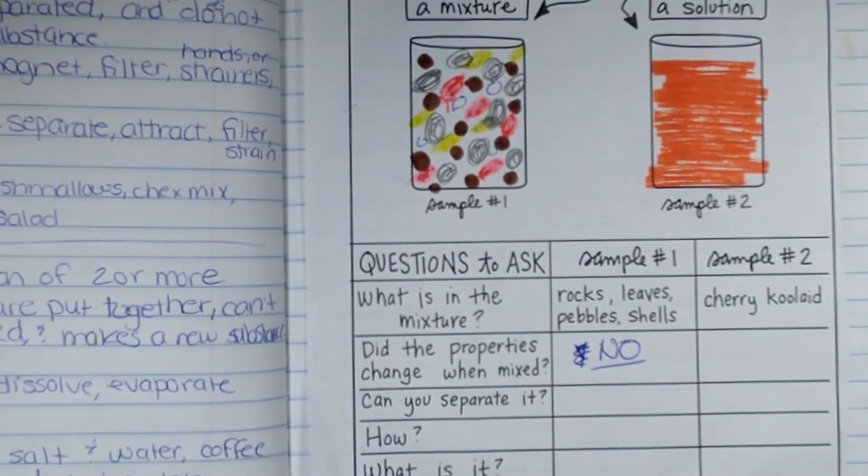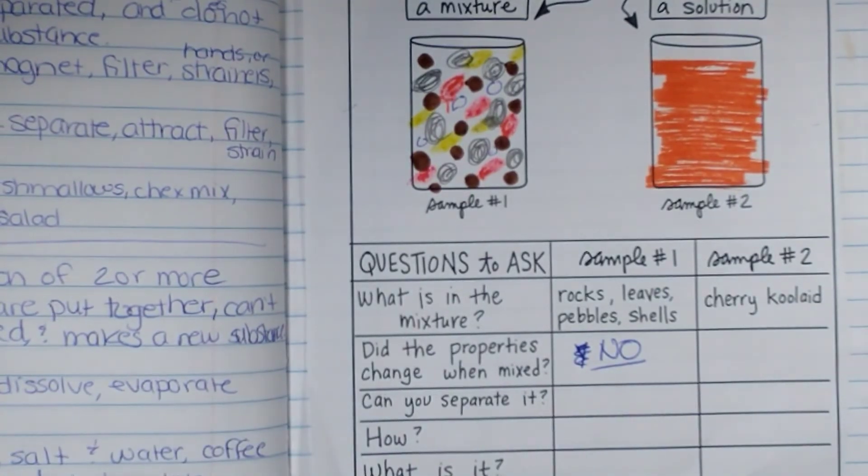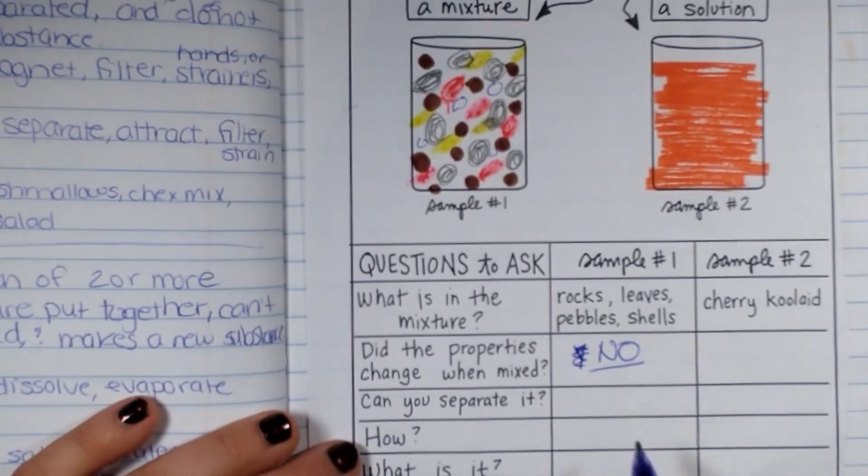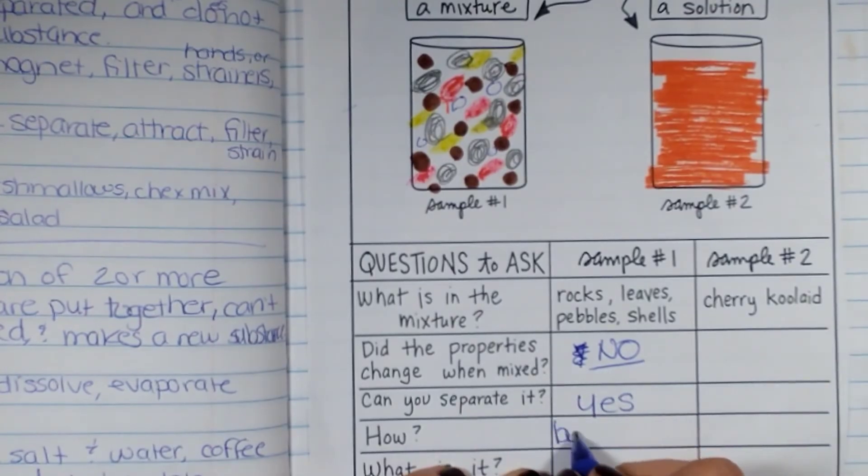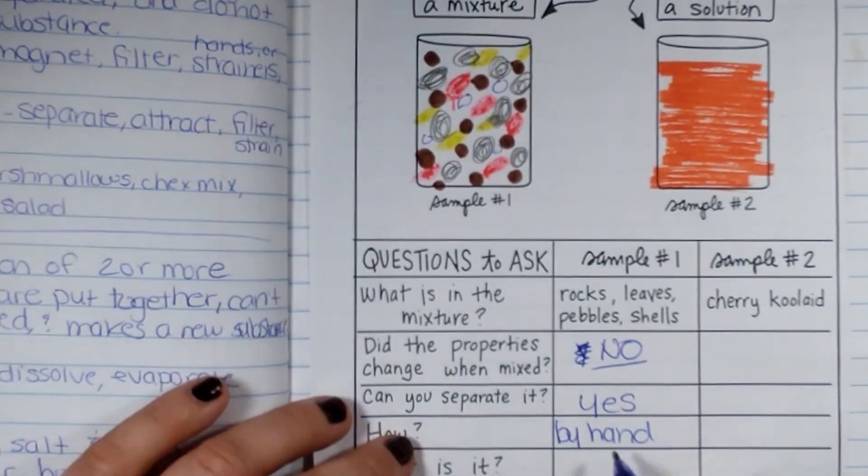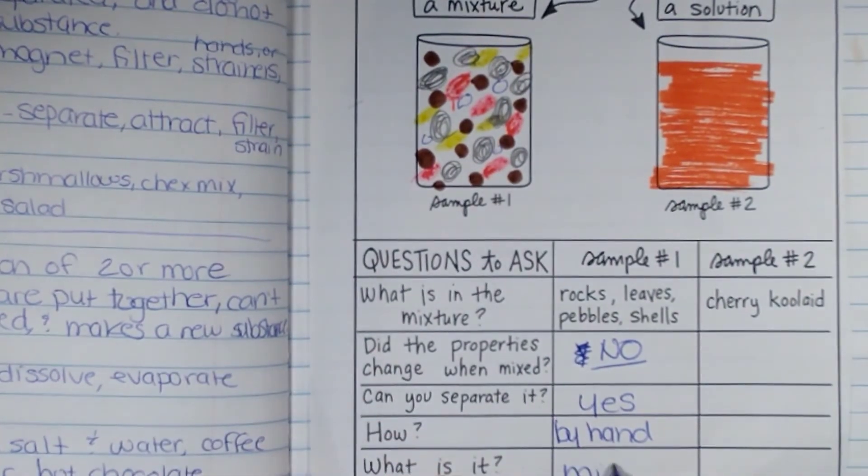Can I separate them? Sure, I can pick out the rocks, I can pick out the shells, I can pick out the leaves, I can separate the leaves by color, I can pick out the pebbles. How can I pick them out? By hand. So this would be a mixture.